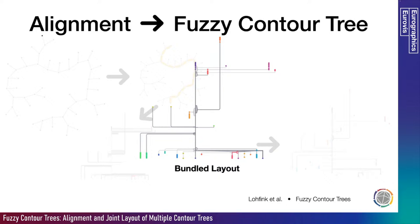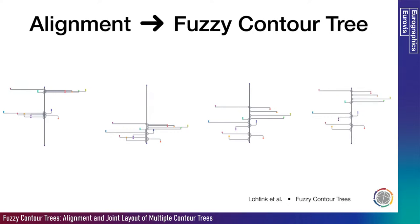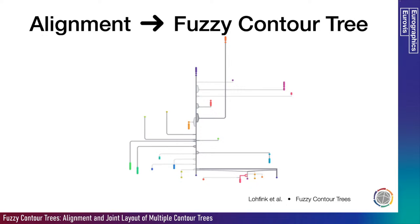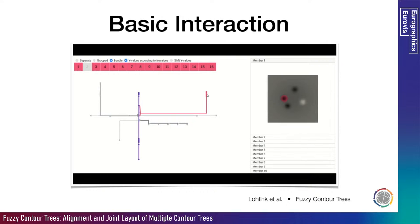An optional step improves the clarity of relations by optimized vertical spacing, done recursively in three steps: all saddles are stacked at the bottom; ranges at the parent branch only overlap if they do in the original tree; spacing is introduced based on bounding boxes of branches, and the original branch distribution is restored as far as possible. The Y value is no longer the ISO value, but distribution and overlapping properties are preserved if possible. The fuzzy contour tree supports comparing, combining, and separating members. Basic interaction is implemented including branch highlighting, tree highlighting of individual trees, and member highlighting.